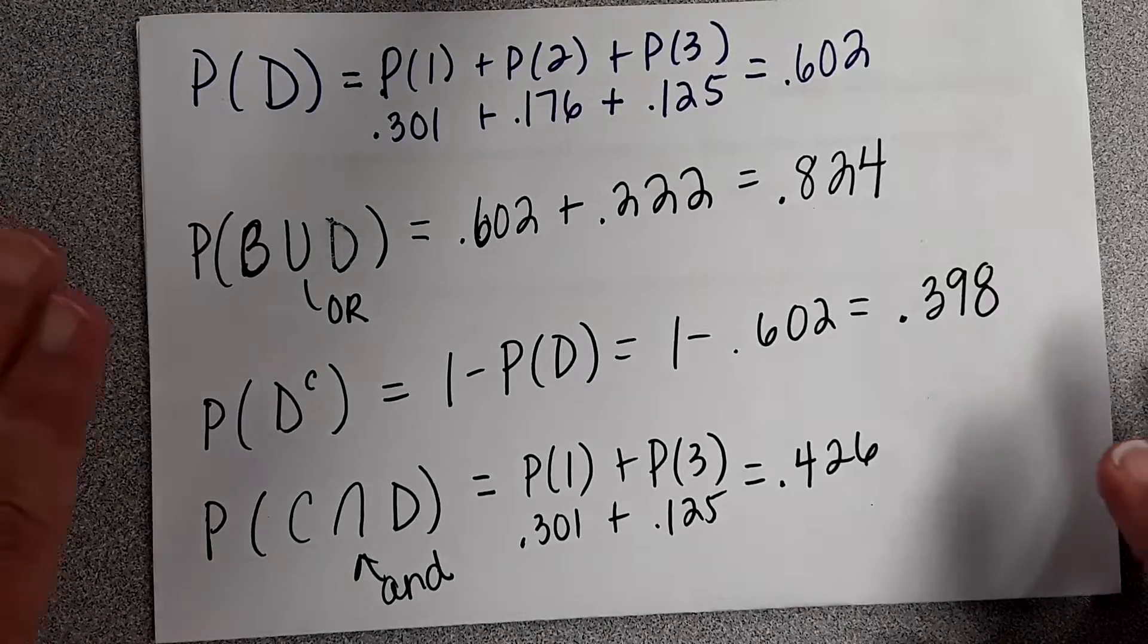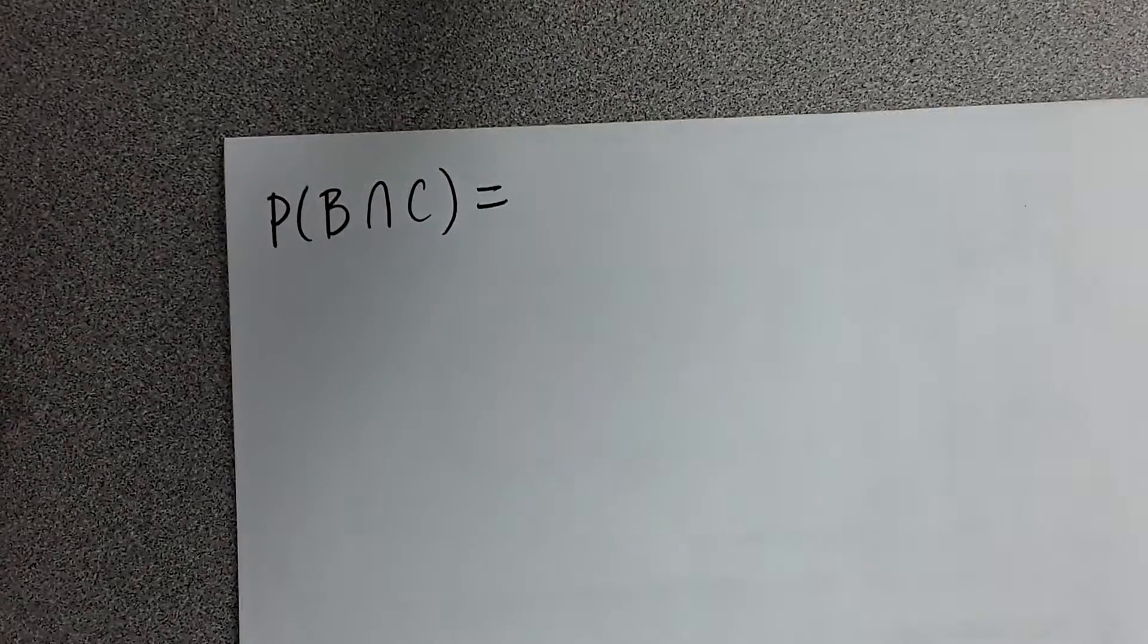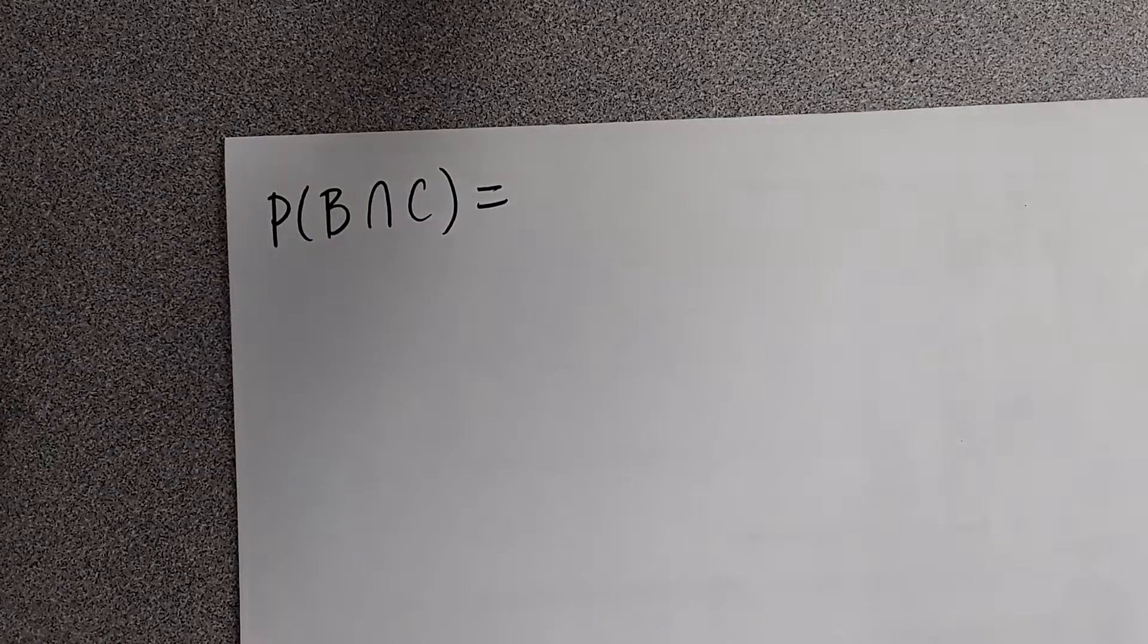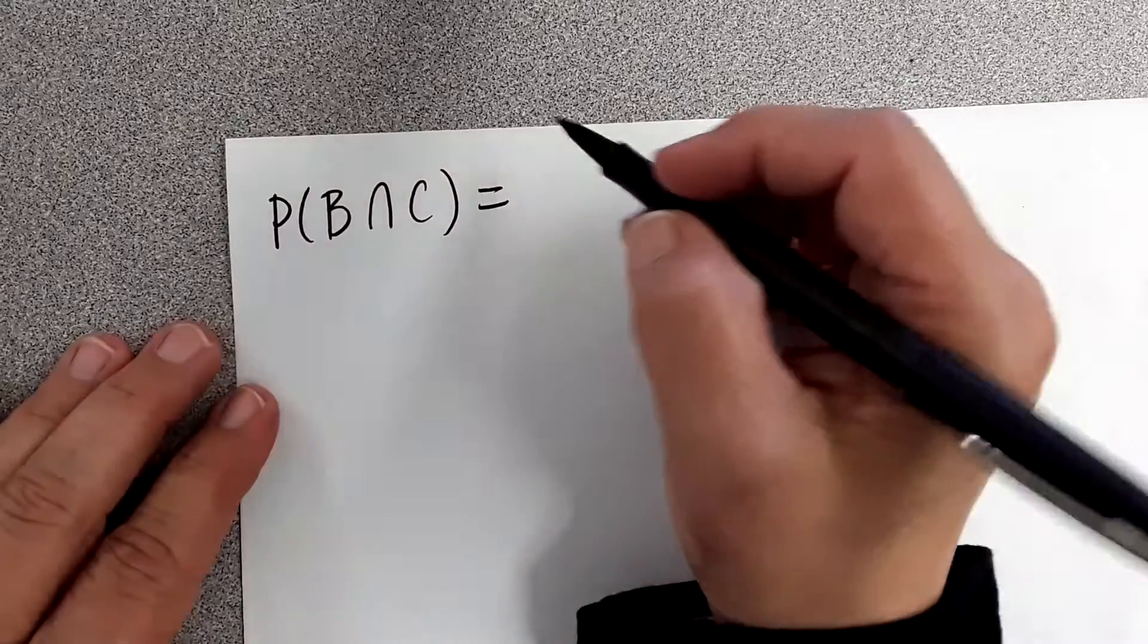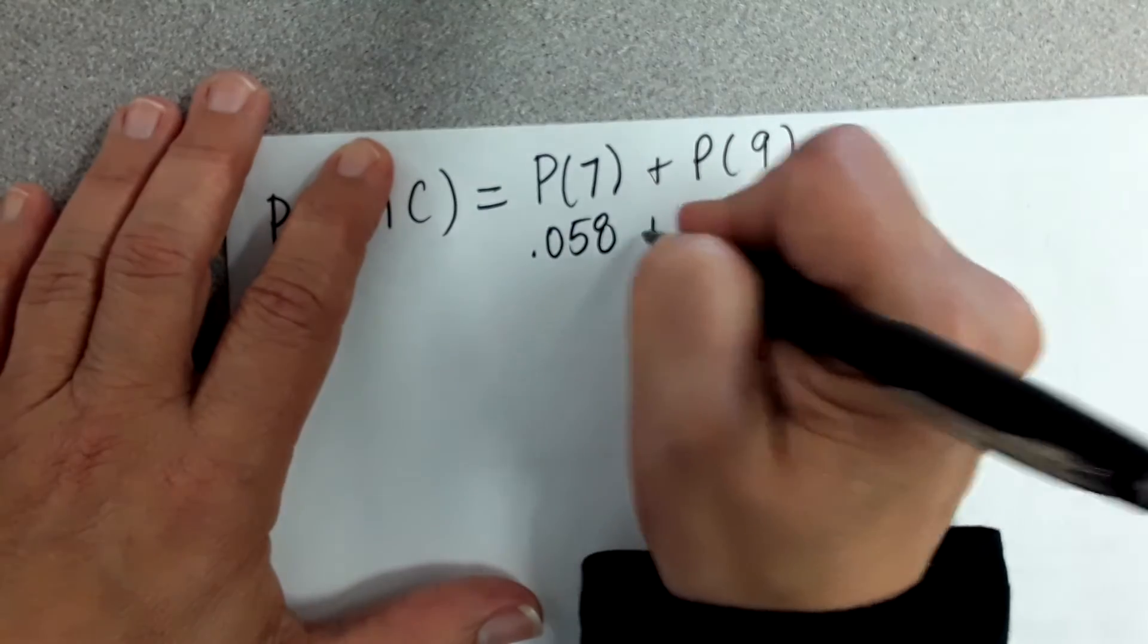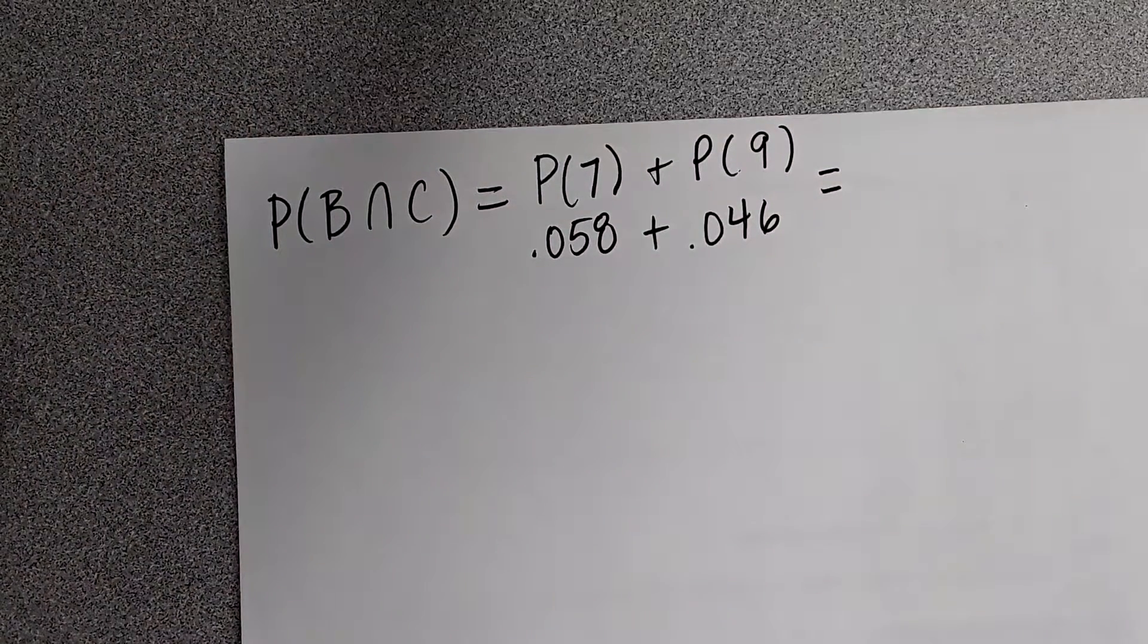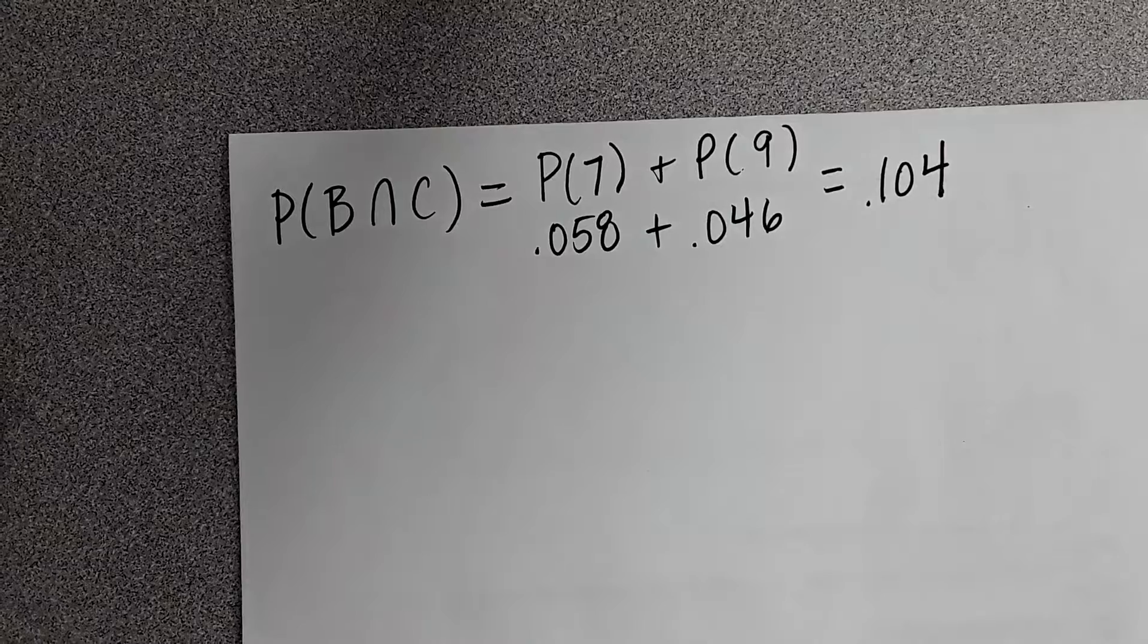And finally, the probability of B intersection C. Event B is the first digit is 6 or greater, and event C is that the first digit is odd. So what numbers do we need? 7 and 9. 7 is 0.058, 9 is 0.046. And we get 0.104.